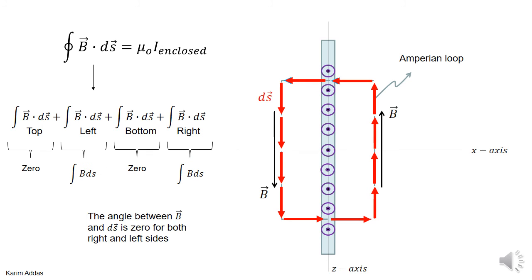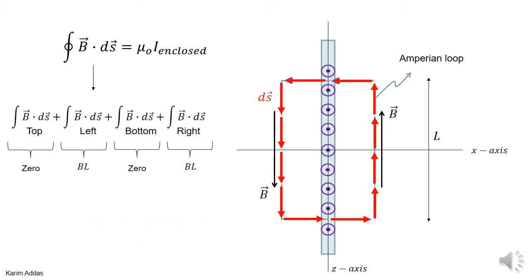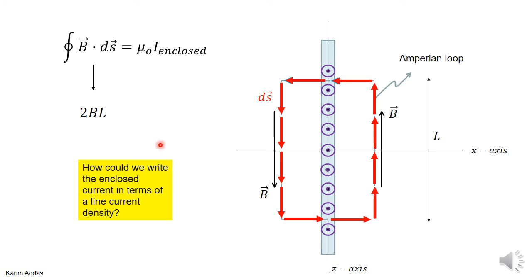Since B is constant along each side, it comes out of the integral. The integral of dS along one side is just the length L of that side. So the left-hand side of Ampere's law reduces to B·L + B·L = 2BL.